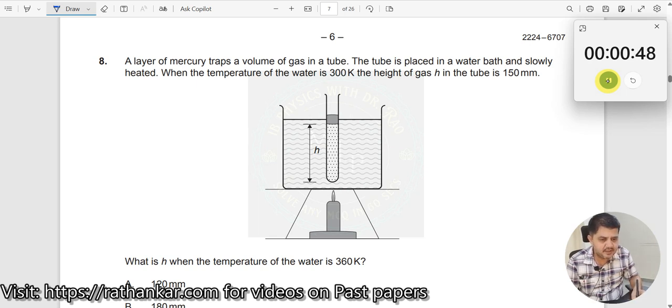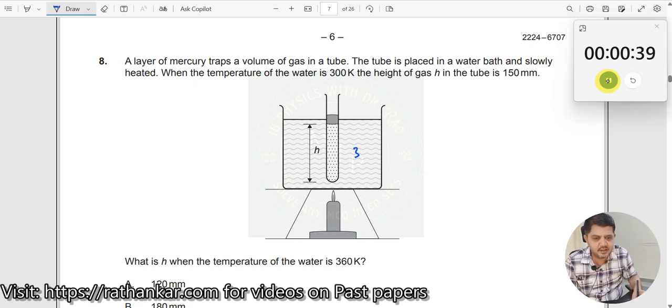So this gas will also increase. Now the height will increase and slowly heated. When temperature of water is 300 Kelvin, then the height of the gas is H over here. This is the initial condition.